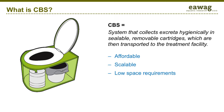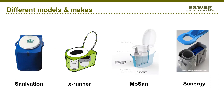Because container-based sanitation systems are small and mobile, they have low space requirements and can be used inside a home. A number of toilet units have been developed in recent years, including those used by Sanivation, XRunner, MoSan and Sanergy, shown here from left to right. They offer the user a modern and well-designed interface, which is important for their acceptance by users. Note that the Sanergy module on the right is the only squat toilet.